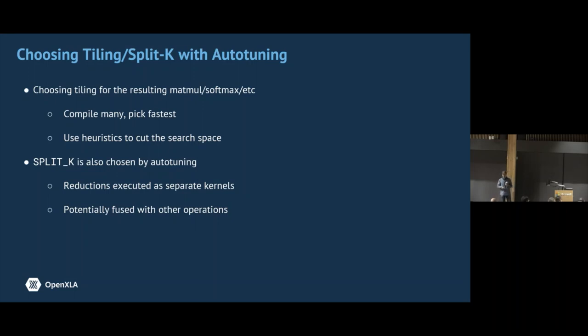After we perform the code generation, we still need to fix the tiling and decide whether we want to apply Split-K. So here we proceed the same way normal Triton would proceed. So we do some autotuning to find a good tiling size. And for Split-K, we need to sometimes add an extra reduction instructions if Split-K is beneficial for the matmul. And then the second fusion path may group such reduction instructions together.